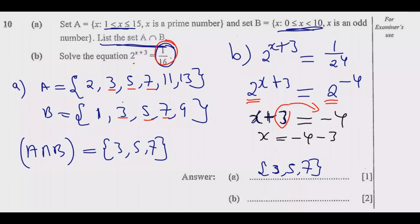The moment this 3 crosses the equal sign it becomes negative. So this gives me negative 7. The value of x is negative 7. Once you do that, you get those two marks.